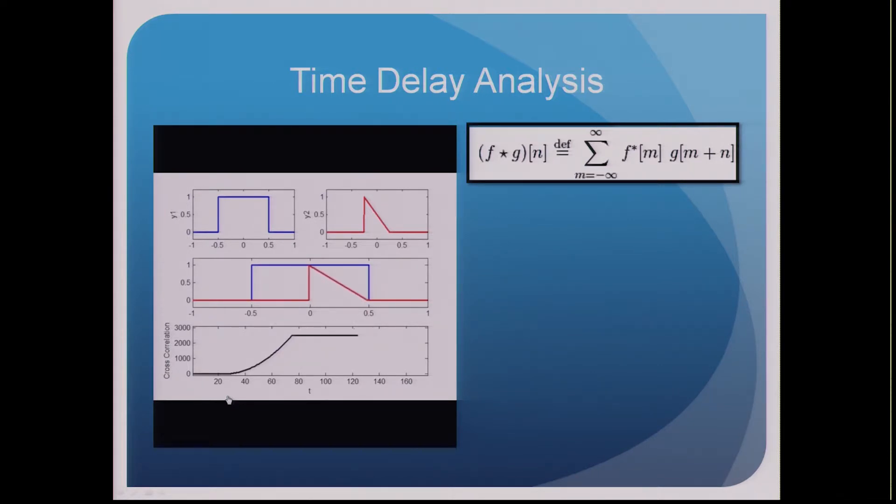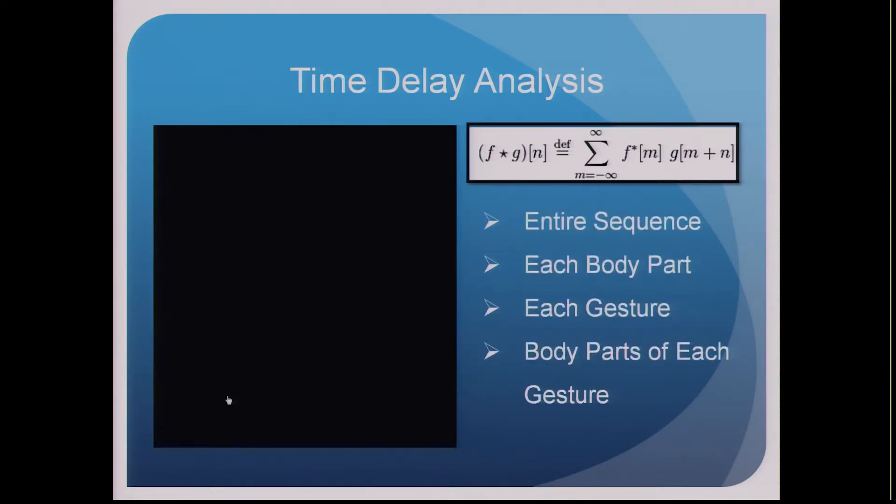However, not only is delay inevitable, but also delay can be inconsistent. As a result, I adopted four different time estimation methods where I can estimate the delay of the entire sequence, each body part, each gesture, or the body parts of each gesture.